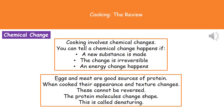We can identify a chemical change has happened if we've made a new substance, if it's an irreversible change, and if an energy change has happened. Those are the three ways that we can identify that a chemical change has occurred.